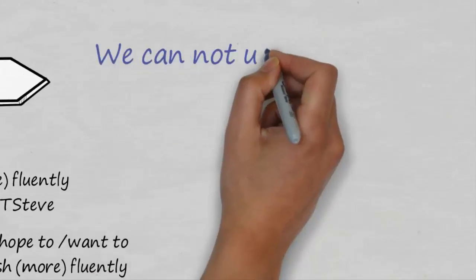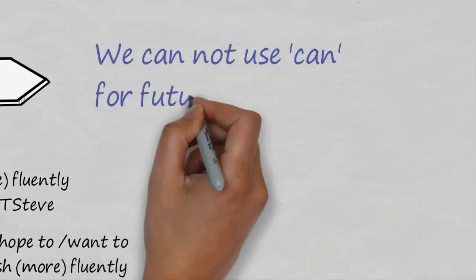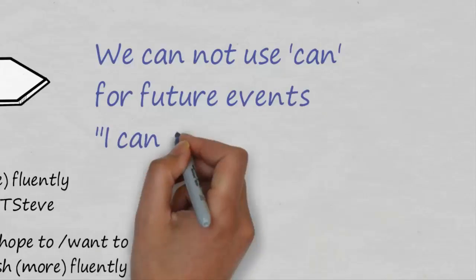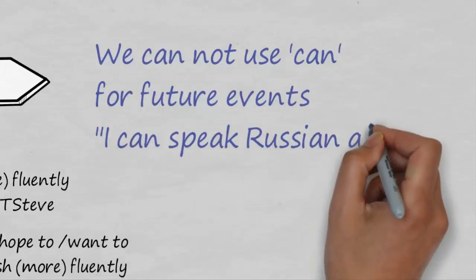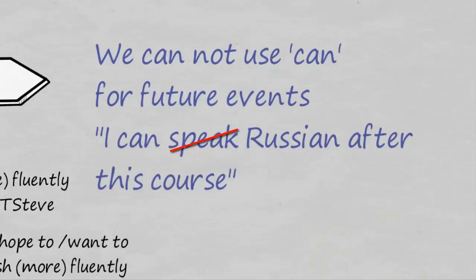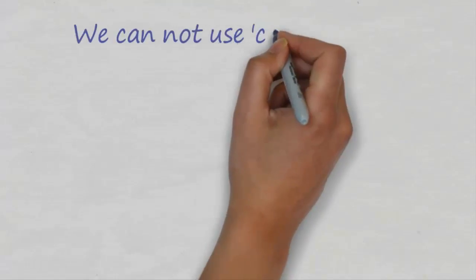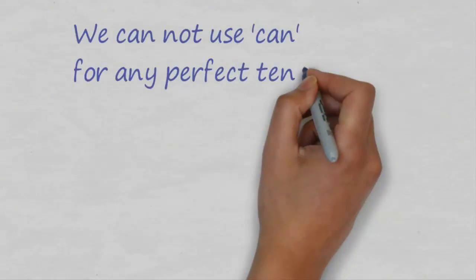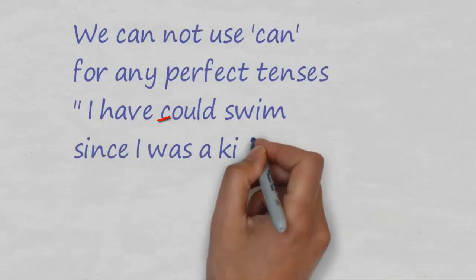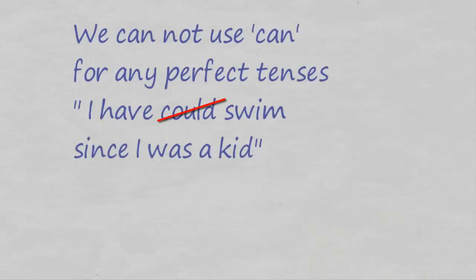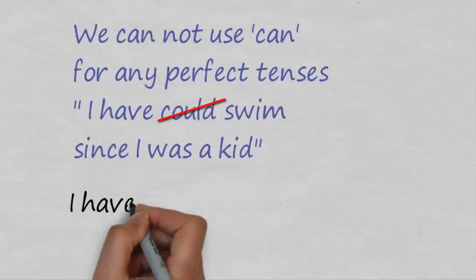Just to recap: we cannot use can for future events. For example, 'I can speak Russian after this course' — that's a very common mistake that candidates make in IELTS. We also cannot use can for any perfect tenses. For example, we cannot say 'I have could swim since I was a kid.' We need to change this to: 'I have been able to swim since I was a kid.' That's also true for all of the perfect tenses — the past perfect or the future perfect.